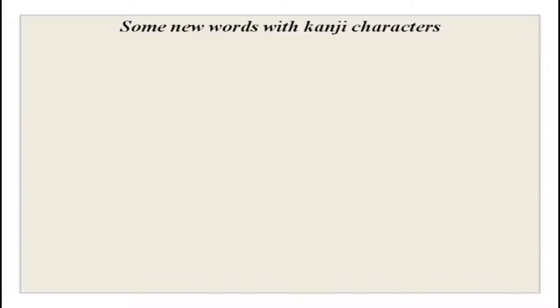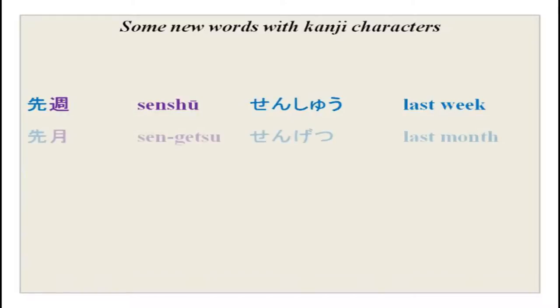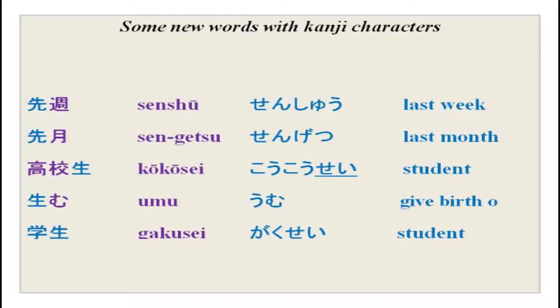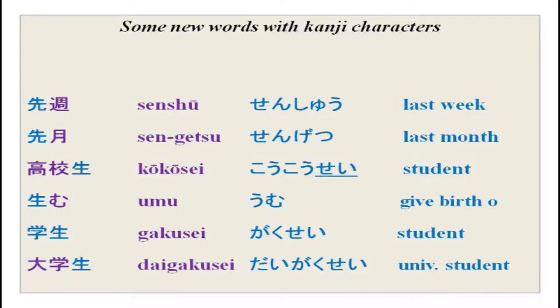There are some new words with kanji characters — repeat after me. Senshuu — the week before. Sengetsu — last month. Koukousei — a high school student. Umu — to give birth to. Gakusei — a student. Daigakusei — a graduate student. You can see sei in koukousei, gakusei, and daigakusei. Umareru — to give birth to — we did this just now in our kanji.